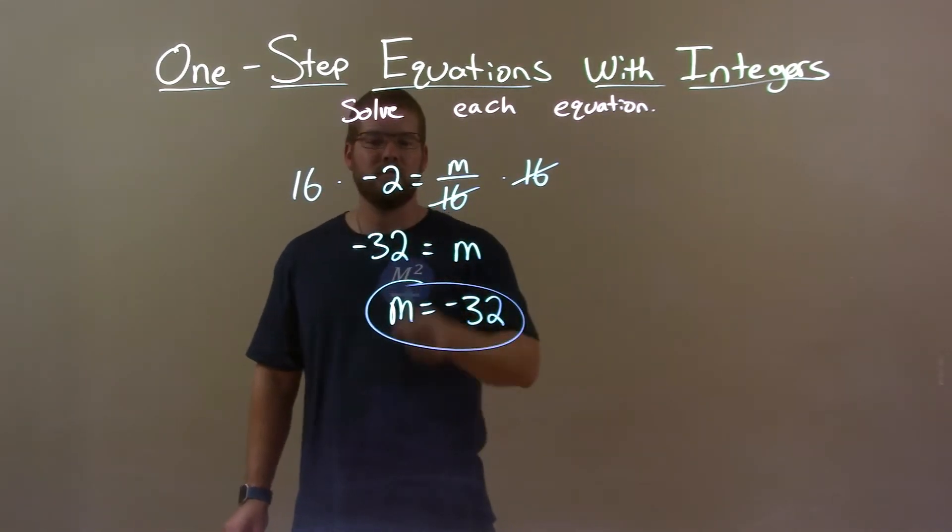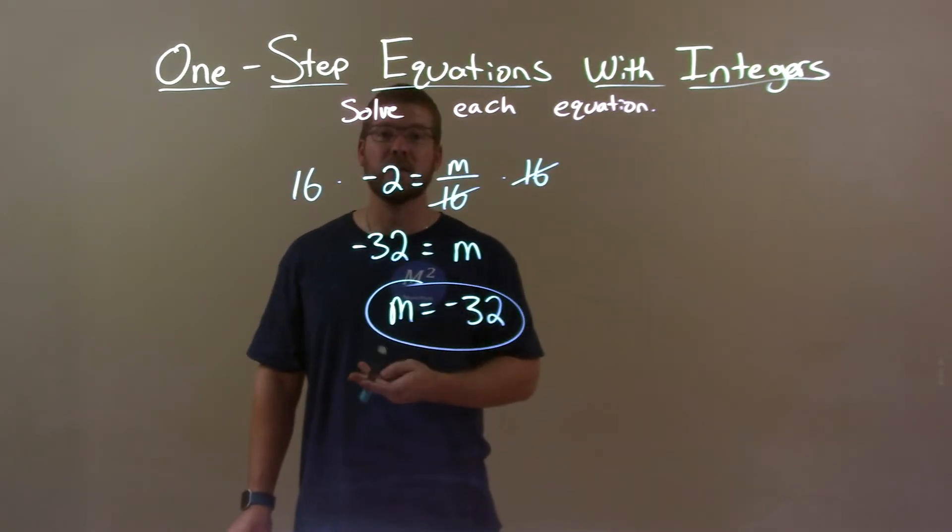Then, 16 times negative 2 is a negative 32. So, again, final answer, m equals a negative 32.